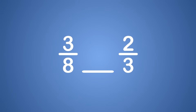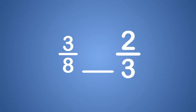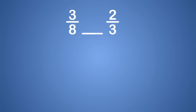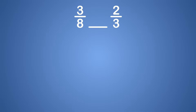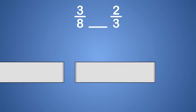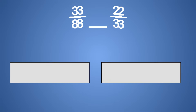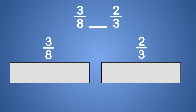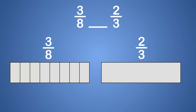Here are two fractions. Which fraction is greater: 3 eighths or 2 thirds? Let's compare the fractions with models. Start by drawing two rectangles that are the same size. Then we partition the rectangles to show the fractions. The rectangle on the left gets divided into 8 equal parts. Now we need to shade 3 parts to make the fraction 3 eighths. This represents 3 eighths.